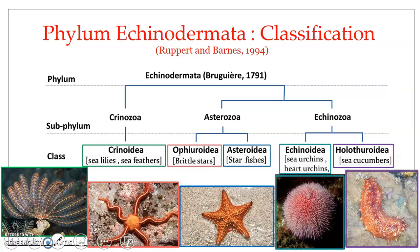Almost about seven thousand species of echinoderms have been discovered, plus almost twice that number of extinct forms have already been discovered. These five classes include the living groups.